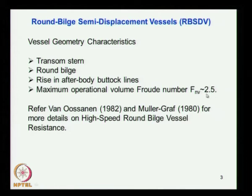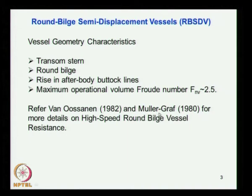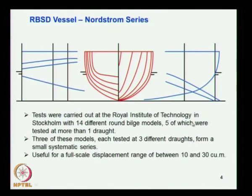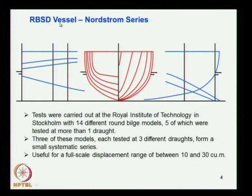You can find more information about this vessel from the reference by Van Oossanen and Moolgraaf. Under this category — semi-displacement type, round bilge — what I denote as RBSD means round bilge semi-displacement vessel. One of the series here is the Nordstrom series.